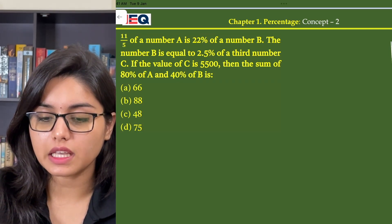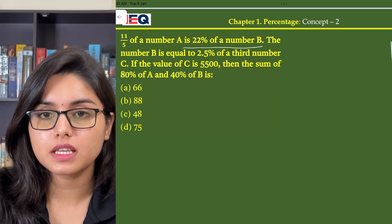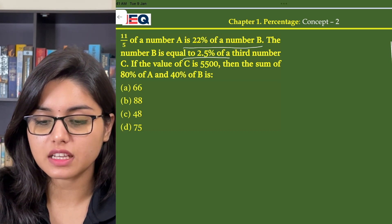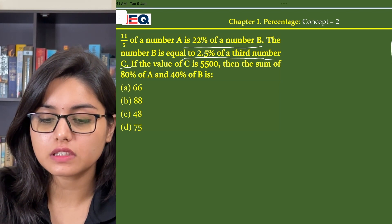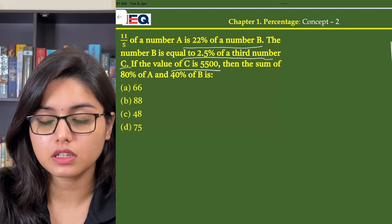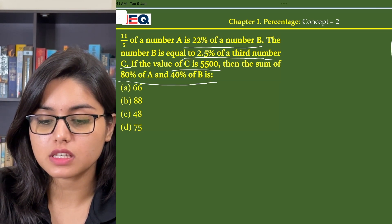11 by 5 of a number A is 22% of a number B. The number B is equal to 2.5% of a third number C. If the value of C is 5500, then the sum of 80% of A and 40% of B is.